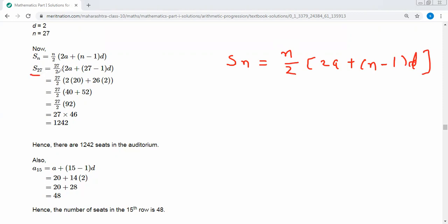Therefore, value of n is 27 by 2 in bracket 2a plus 27 minus 1 into d. Value of d is 2. Therefore, 27 by 2, 2 into 20 is 40, 26 into 2 is 52, 40 plus 52 is 92.